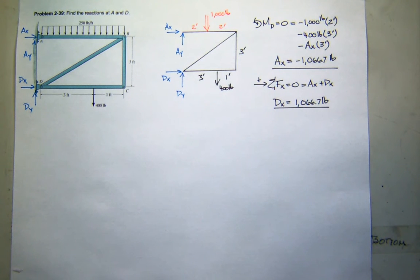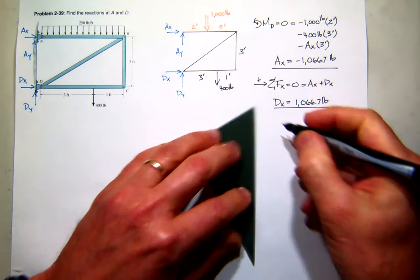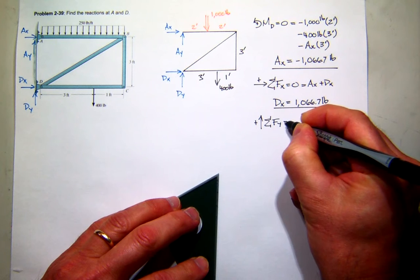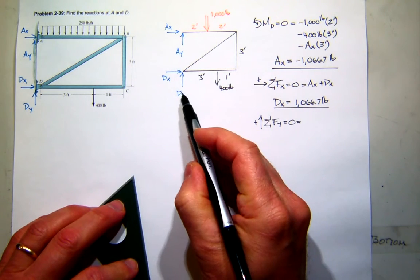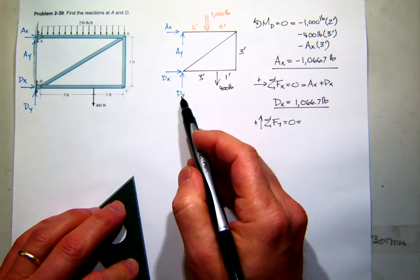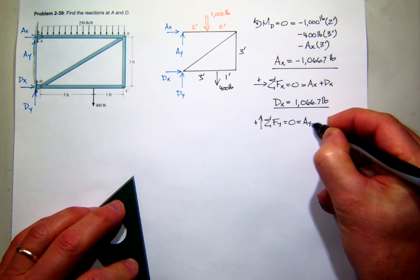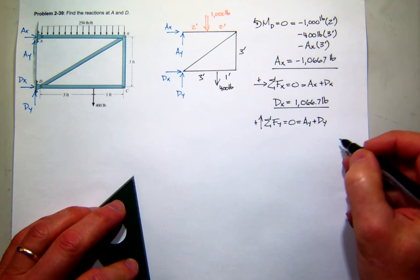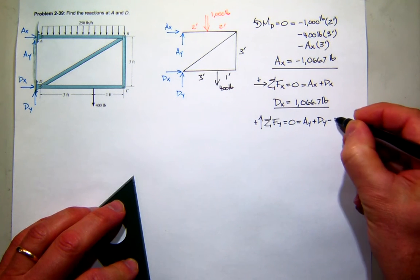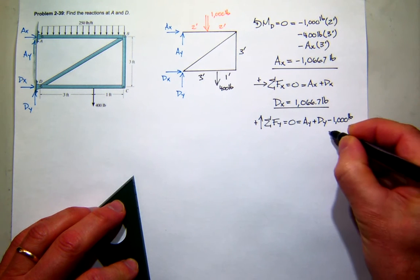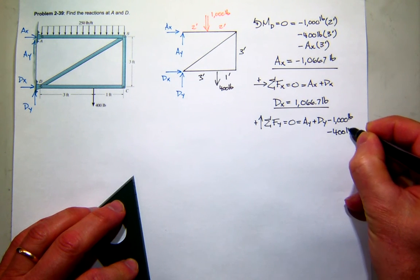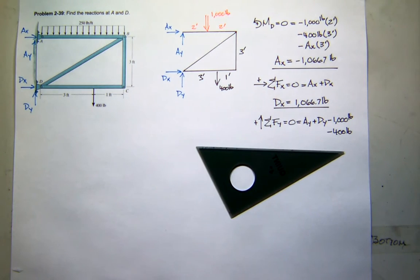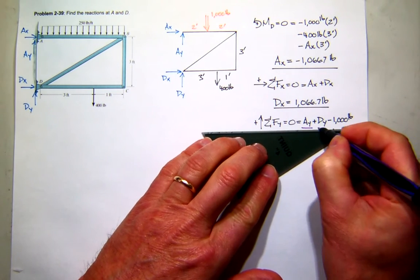Now, I have one more equation left. What is it? So I can sum forces in the Y direction. And this is where the challenge comes in. I've got Ay acting up. Dy acting up. So that's two unknowns in one equation. So I won't be able to solve this. But I'll have a relationship between A and D that I can use later. And then also I've got minus the 1,000 pounds, which was my concentrated equivalent, and minus the 400 applied force.